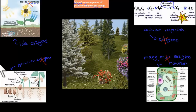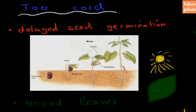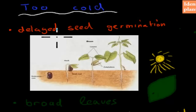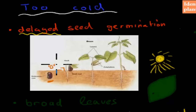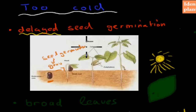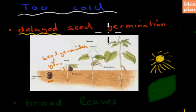Now we'll identify responses for when it's too cold and too warm. Plants don't sweat or shiver, but they have different responses. The first cold response is delayed seed germination: the seed waits until the temperature is optimum before starting to grow, because it needs enzymes to grow properly. If it's too cold, it delays germination.